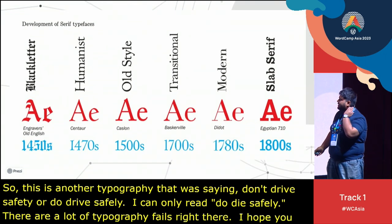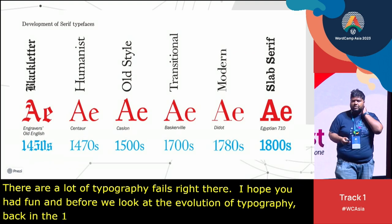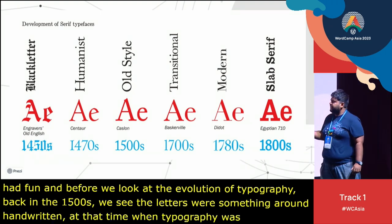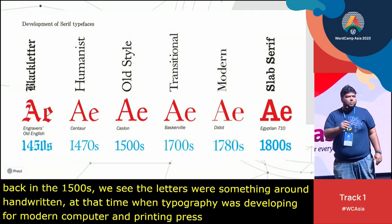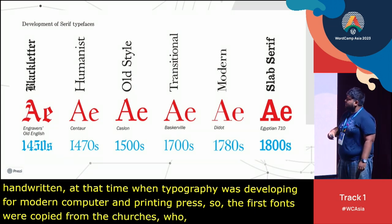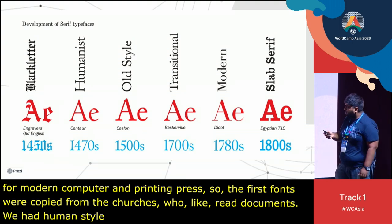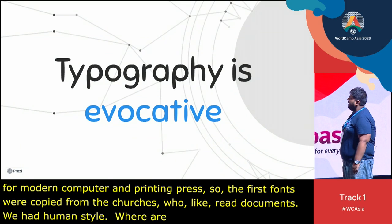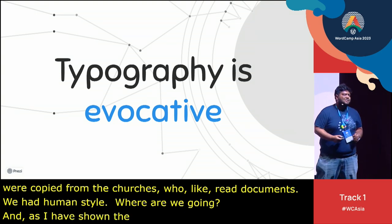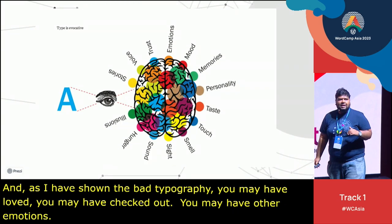If you look at the evolution of typography back in the 1500s, the letters were something around handwritten. At that time when typography was developing for the modern printing press, the first fonts were copied from churches that gave handwritten documents. Then we had humanist style, casual style, and some other styles — a quick recap of where we were and where we are going. As I've shown the bad typography, you may have laughed or chuckled. Typography is actually playing with your emotions.